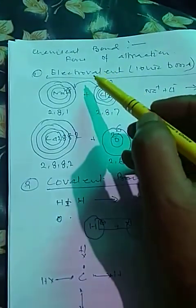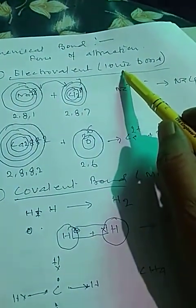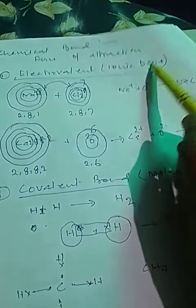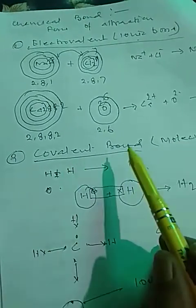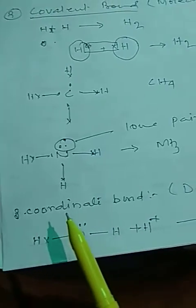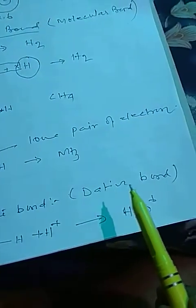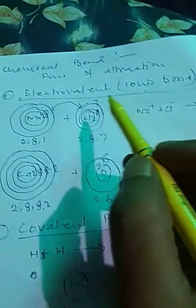They are of three types. First is Electrovalent Bond, which is also called Ionic Bond. Second is Covalent Bond, which is also known as Molecular Bond. And the third one is Coordinate Bond, which is called Dative Bond.